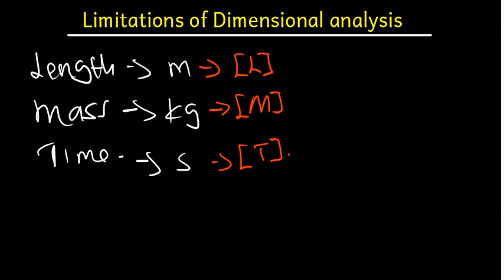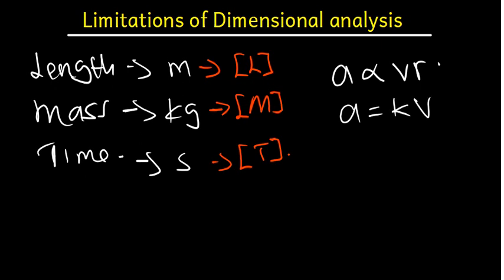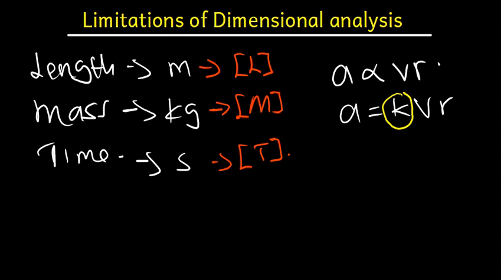The next limitation is that dimensional analysis does not give the value of the constant K. For example, if you want to derive an equation and you say acceleration is proportional to V times L, where there is proportionality you replace it with equal to K. Dimensional analysis does not give the value of K. You can get the values of all the other quantities, but you cannot get the value of K. K is constant unless you have been given its value.